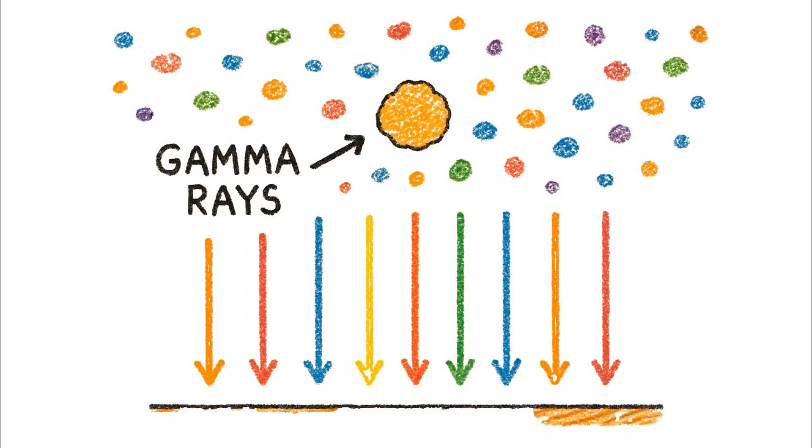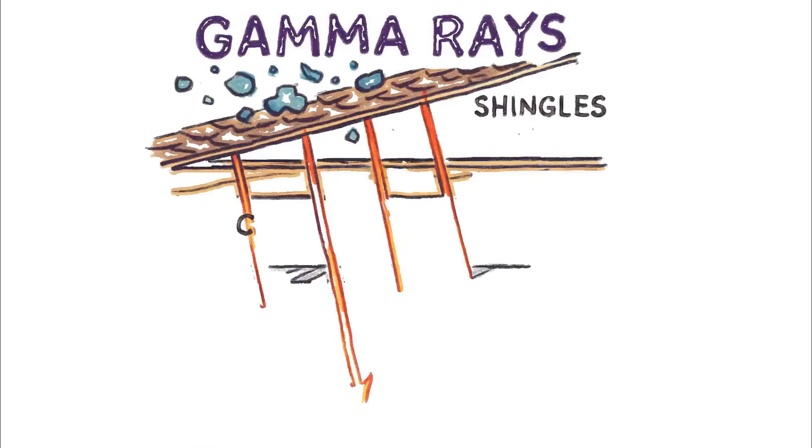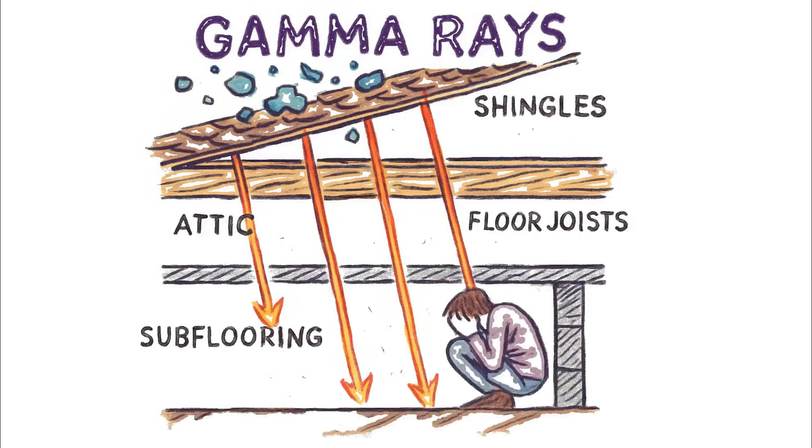And that radiation doesn't just travel sideways, it shines down. It punches straight through your shingles, attic, and most importantly, the simple wooden floor joists and subflooring that form the ceiling of your basement.